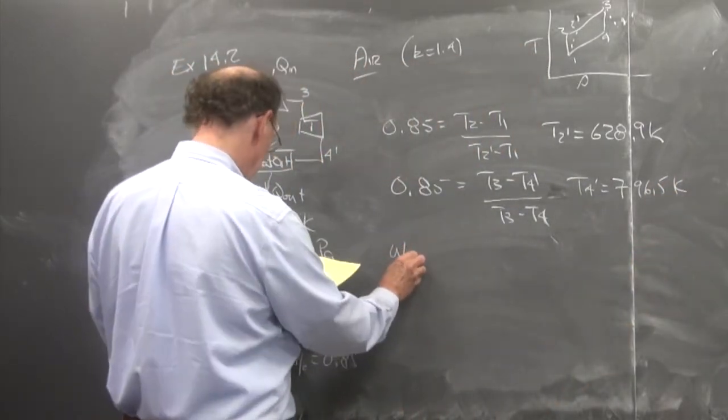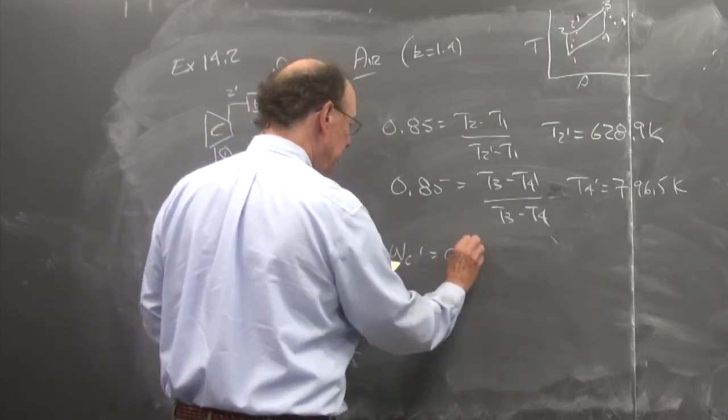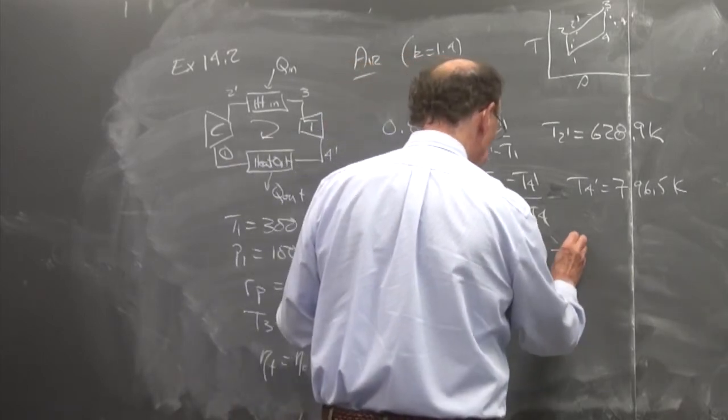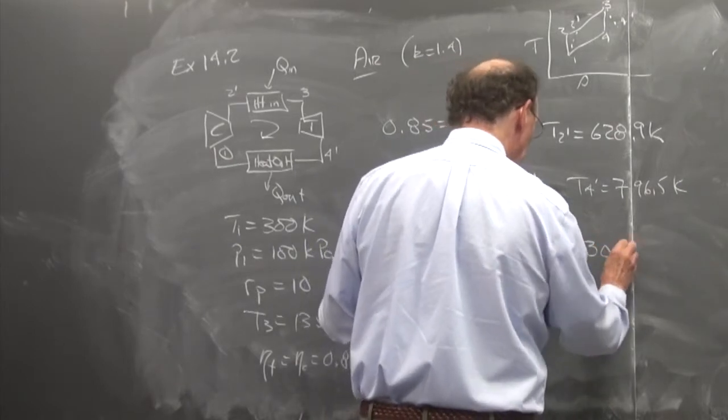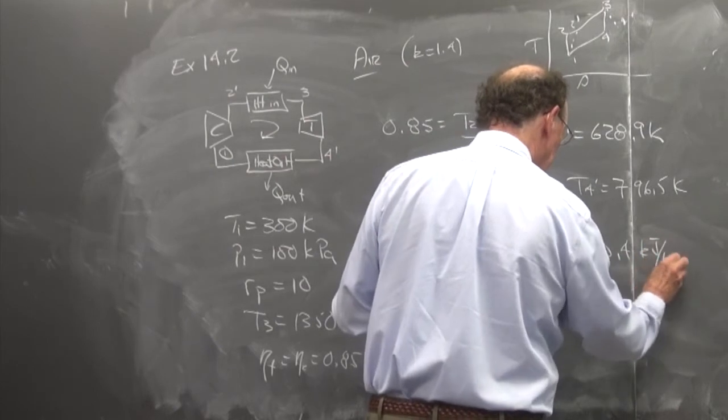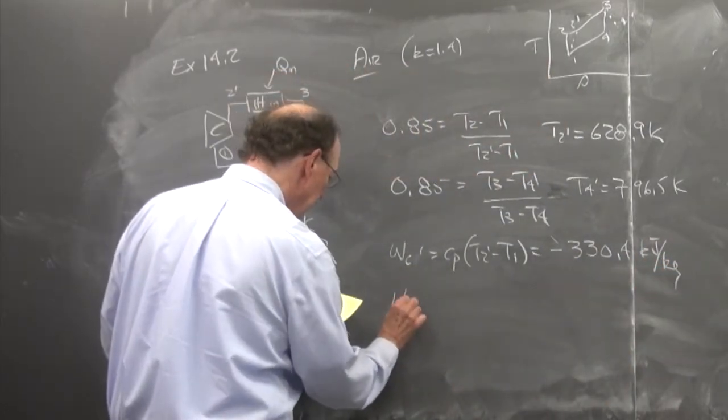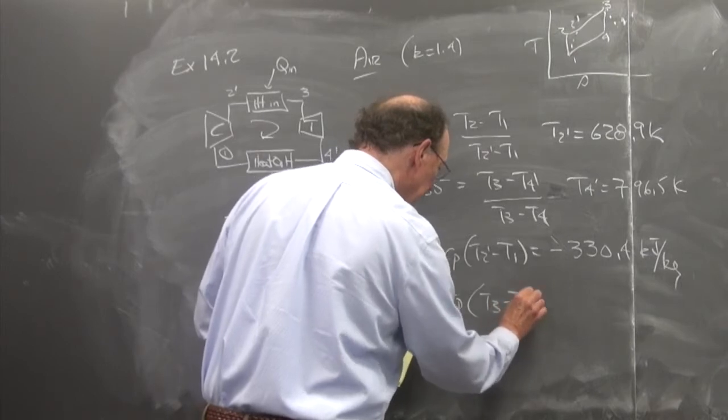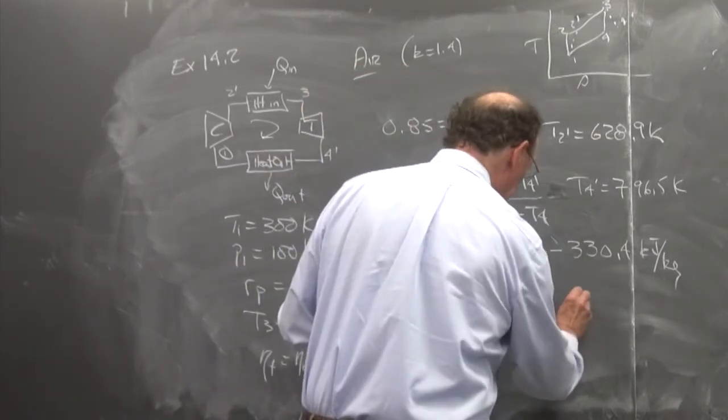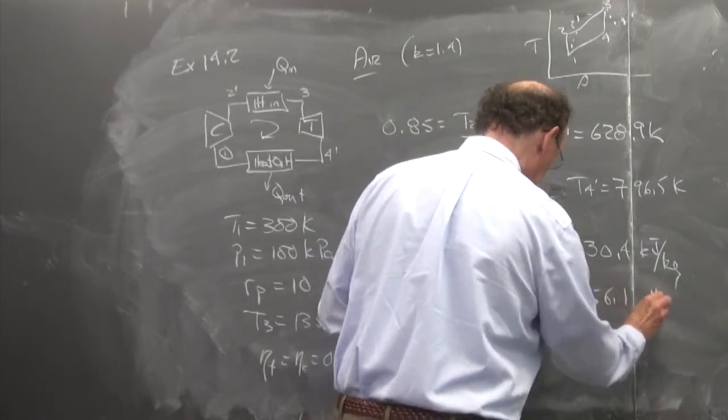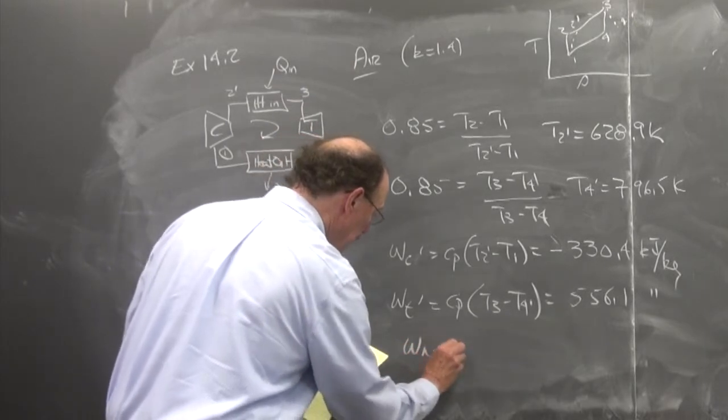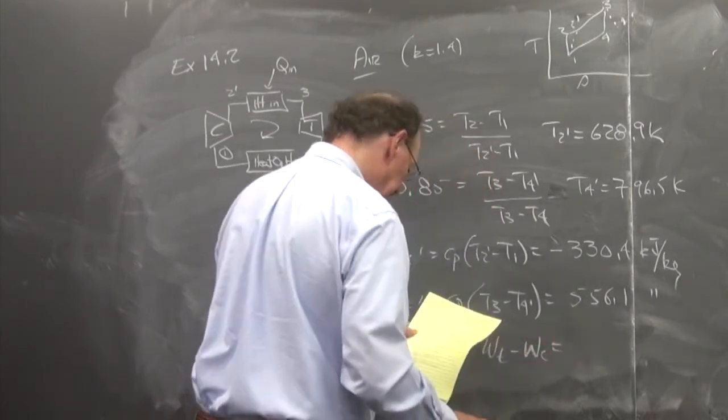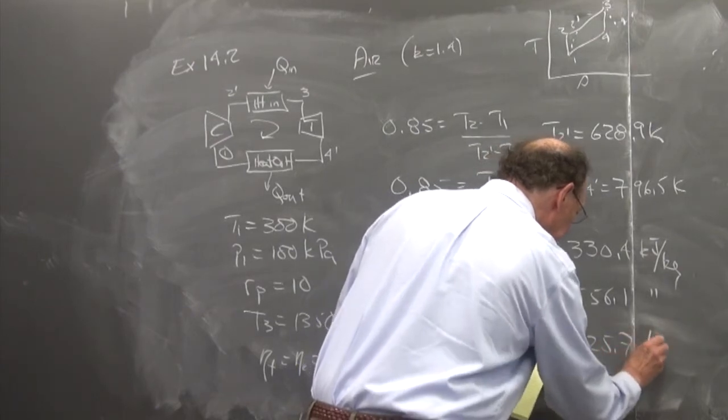And WC prime is equal to c sub p times T2 prime minus T1. WT prime is c sub p times T3 minus T4 prime, is equal to 556.1. And w net is equal to WT minus WC, is equal to 225.7 kJ per kg.